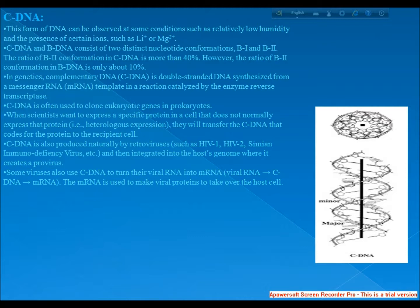In a reaction catalyzed by the enzyme reverse transcriptase. cDNA is often used to clone eukaryotic genes in prokaryotes. When scientists want to express a specific protein in a cell that does not normally express that protein, that is heterologous expression, they will transfer the cDNA that codes for the protein to the recipient cell. cDNA is also produced naturally by retroviruses such as HIV-1, HIV-2, Simian immunodeficiency virus, etc., and then integrate it into the host's genome where it creates a provirus.